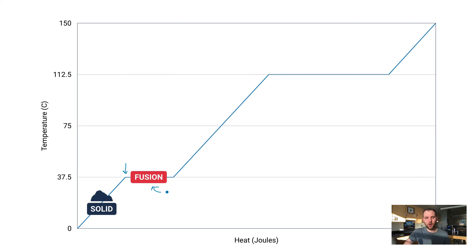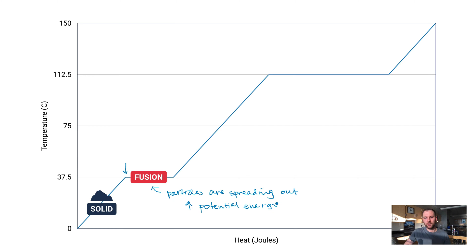In this area of the graph, the heat being added is not being used to change the temperature — it's being used to change the phase. That means particles are spreading out, which is an increase in what we call potential energy, related to the distance between particles. Back in the solid phase, as temperature goes from 0 to 37.5, we see an increase in kinetic energy — after all, temperature is the measure of kinetic energy, it's how fast the particles are moving.